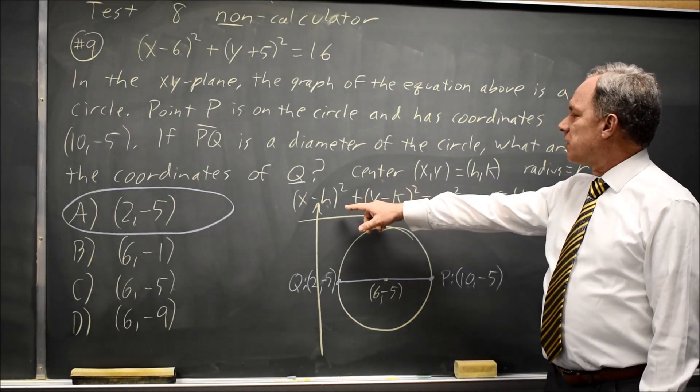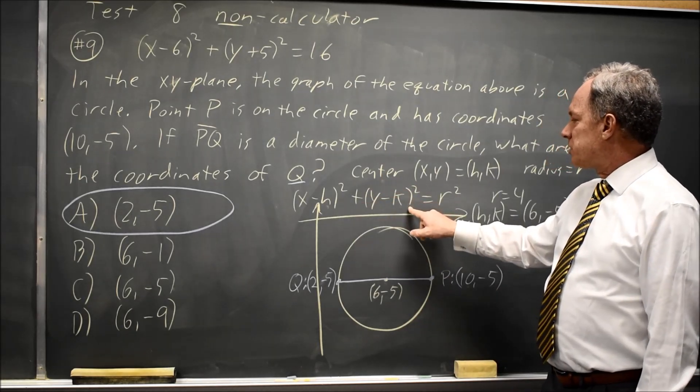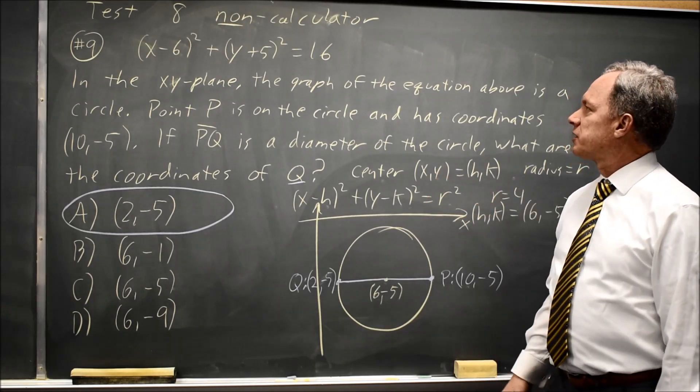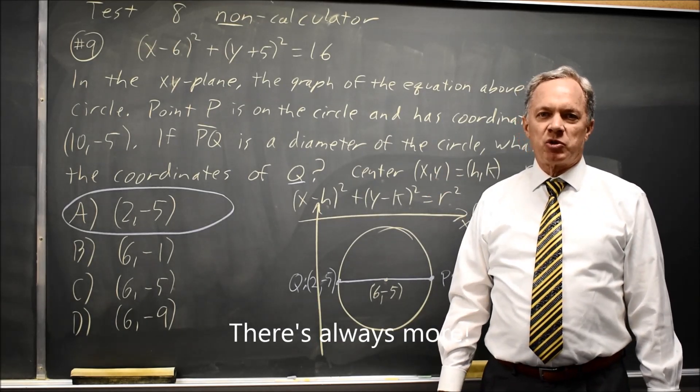But once again, the standard equation (X-H)² + (Y-K)² = R² for center (H,K) and radius R helps you to answer this question. Come back soon for more SAT math.